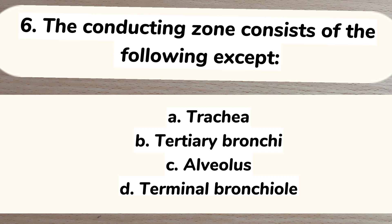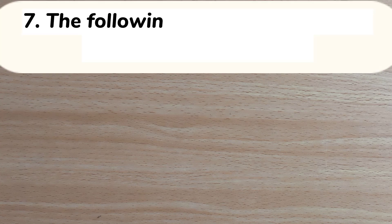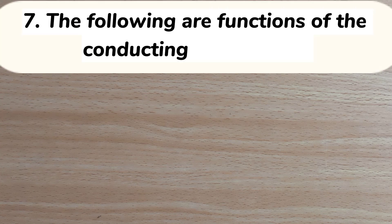Number 6. The conducting zone consists of the following except: A. Trachea. B. Tertiary bronchi. C. Alveolus. D. Terminal bronchiole. Answer: C. Alveolus.